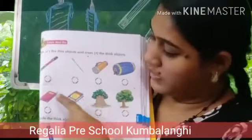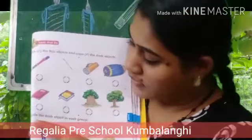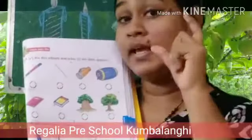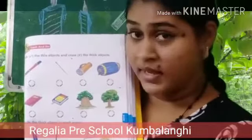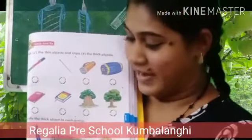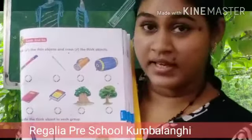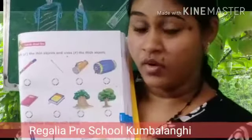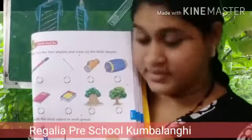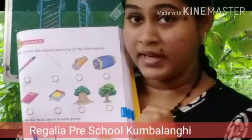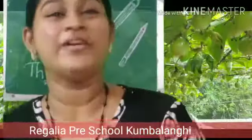The other activity is: circle the thick object. Which one can you say? Yes, you are right — the pencil is thick, so circle the pencil. Can you see? Two objects are here, one is thick and the other is thin. Circle the thick one. See you in the next video. Take care. Bye!